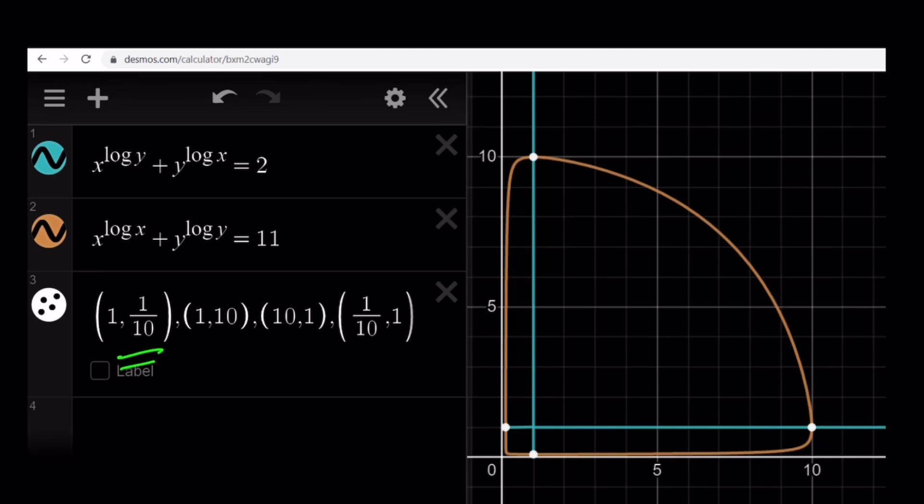And notice that the horizontal line and the vertical line and this weird closed shape, they intersect at four points. And those points are 1 comma 1 tenth, 1 comma 10, 10 comma 1, and 1 tenth comma 1. And this brings us to the end of this video.